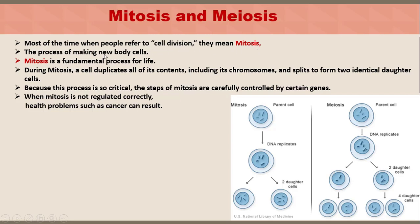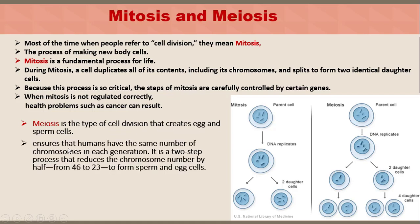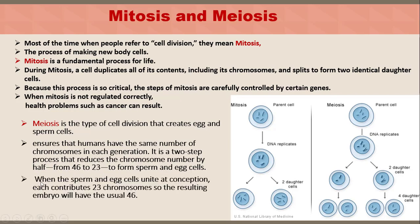Mitosis is a fundamental process for life. During mitosis, a cell duplicates all of its contents including its chromosomes, and splits to form two identical daughter cells. Because this process is so critical, the steps of mitosis are carefully controlled by certain genes. When mitosis is not regulated correctly, health problems such as cancer can result. Meiosis is the type of cell division that creates egg and sperm cells, ensuring humans have the same number of chromosomes in each generation. It is a two-step process reducing chromosome number by half from 46 to 23. When sperm and egg unite at conception, each contributes 23 chromosomes, so the resulting embryo will have the usual 46 chromosomes.